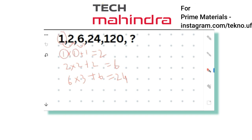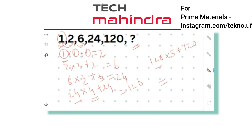The pattern is: each number in the series multiplied by an incrementing integer, plus the same number. Specifically: 6 × 3 + 6 = 24, then 24 × 4 + 24 = 120. So the missing number is 120 × 5 + 120 = 600 + 120 = 720. The missing number is 720. If your answer is also 720, please comment below and I'll give you a heart!